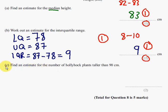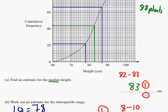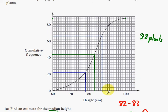Now last bit then. Part C. Find an estimate for the number of hollyhock plants taller than 90 centimeters. So you're going to need your ruler for part C. And you have to find plants that are taller than 90 centimeters. So if you go back up to graph this time, you need to go up at 90, up to the cumulative line, and across.